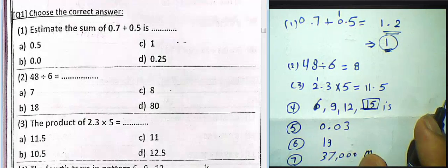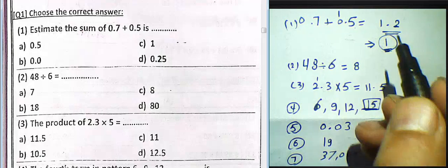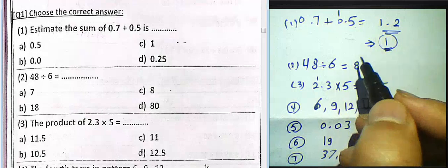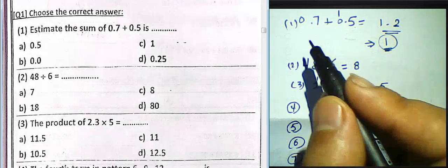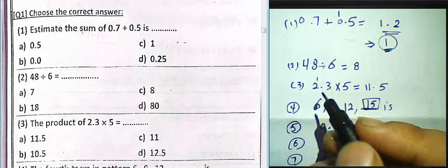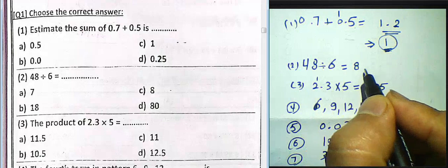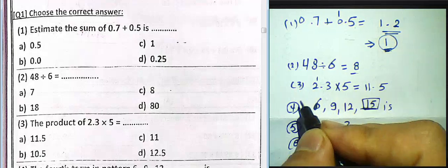Rounded to the nearest one, 1.2 gives us approximately 1. That is the answer to Question 1. Question 2: 48 divided by 6 equals 8. Question 3 is next.